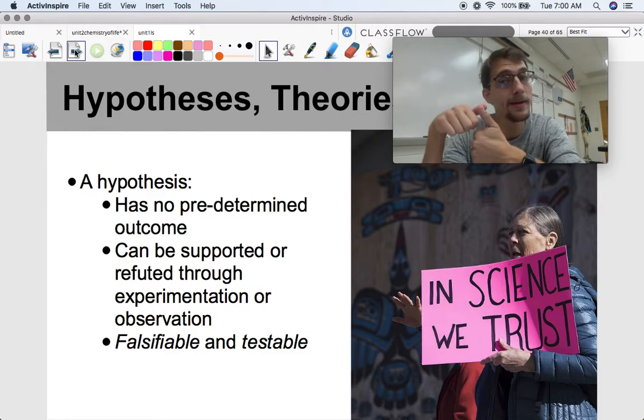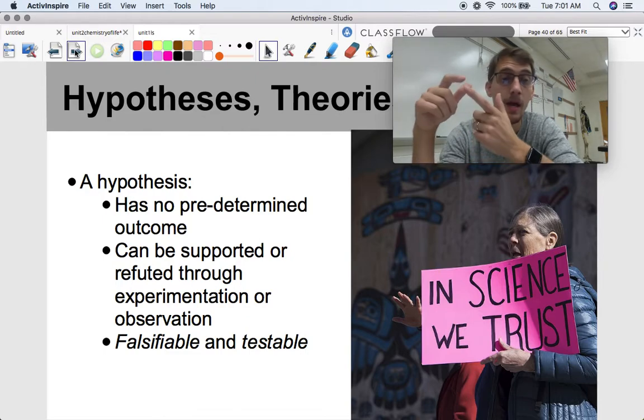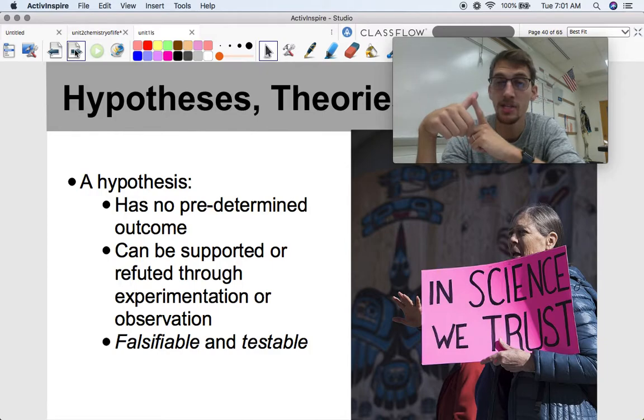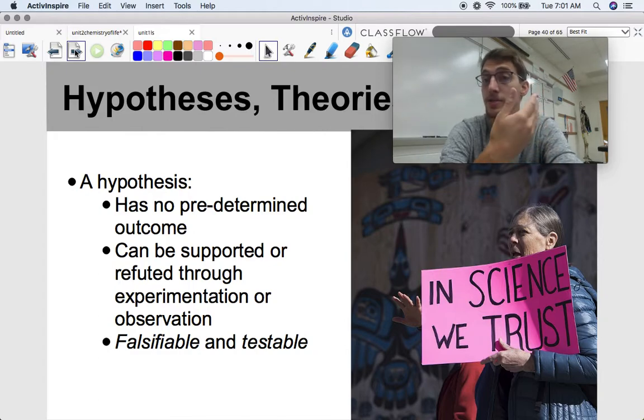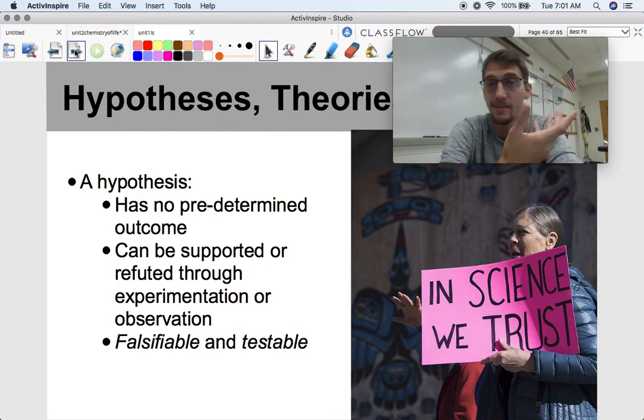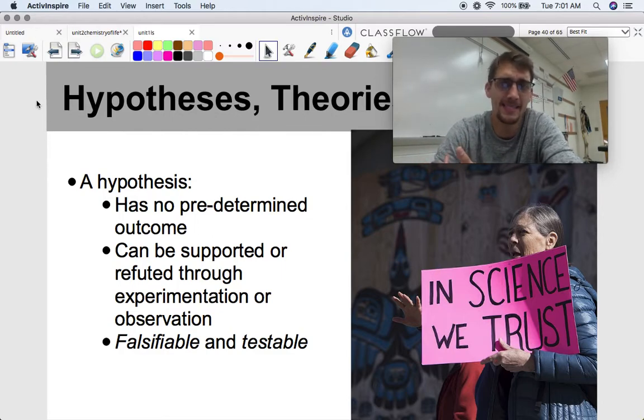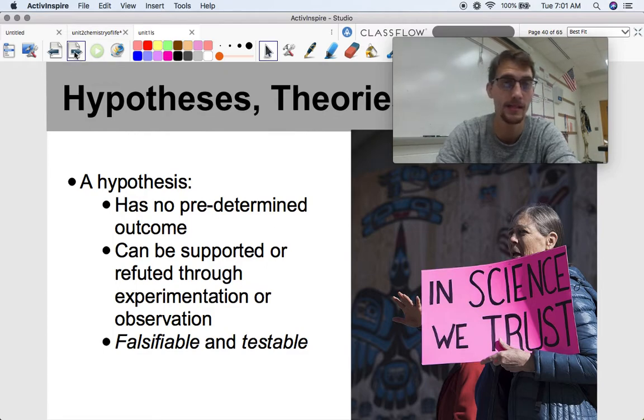This hypothesis can be accepted or rejected at the end of a study, and it's a really important part of the whole scientific method. A hypothesis has no predetermined outcome. It's not really a hypothesis if you know what's going to happen at the end of the experiment. It can be supported or refuted through experimentation and observation. Two important points about hypotheses: they are falsifiable, meaning that they can be shown to not be supported by evidence and not correct, and they can be testable. A hypothesis needs to be testable by other people. Otherwise, it doesn't really help science much at all. If you can't test your hypothesis, then it's not really a starting point for further investigation. It has to be falsifiable and testable.